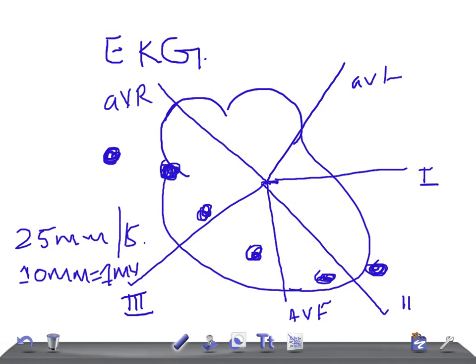We take 12 leads because if you have more leads, you can see the heart from very different and more angles, giving you the exact picture of what is happening inside the heart. So 12 EKG leads are the standard for EKG investigation.